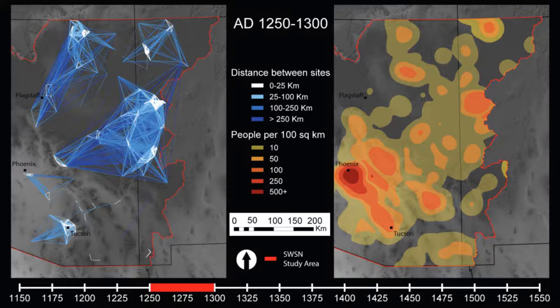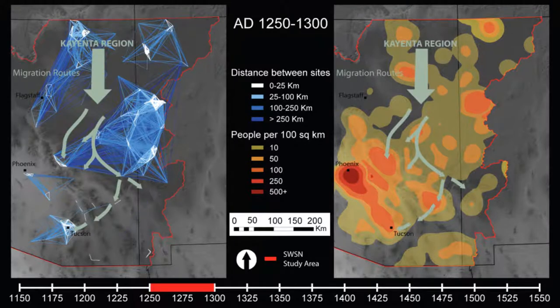The last quarter of the 13th century was a period of dramatic change in the study area. The period after AD 1275 was marked by the depopulation of much of northeastern Arizona, including the Kayenta region. Archaeological evidence suggests that many people who left the Kayenta region at this time immigrated into a number of locations in central and southern Arizona as well as southwestern New Mexico.